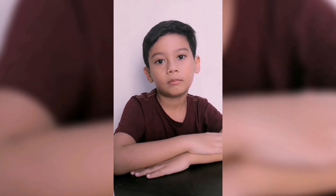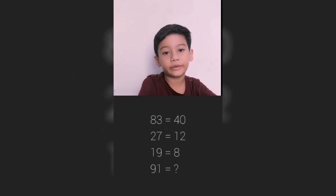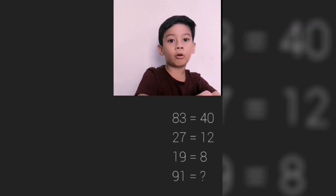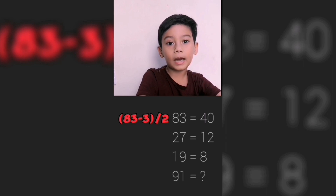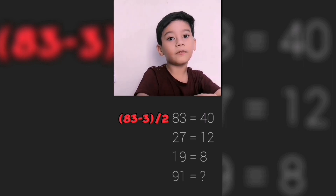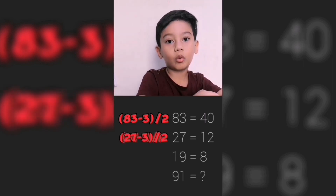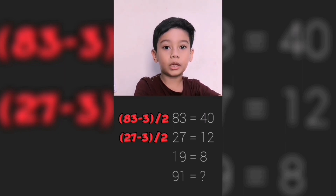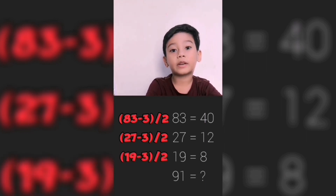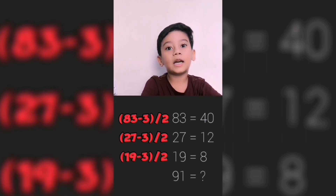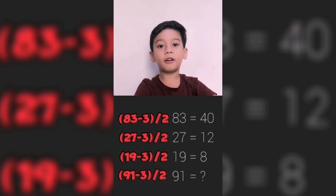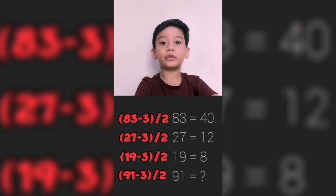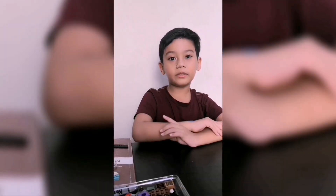Here is the solution. If you notice, 80 is the half of 40. That means you have to apply the values divide by 2 and minus 3 to solve the rest of the given numbers. So 27 minus 3 equals 24, divided by 2 equals 12. 19 minus 3 equals 16, divided by 2 equals 8. 91 minus 3 equals 88, divided by 2 equals 44. So that's it!